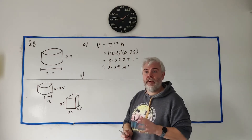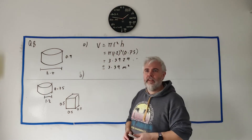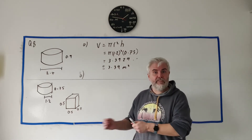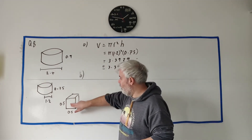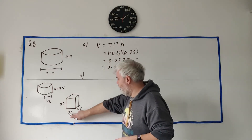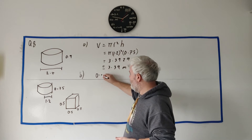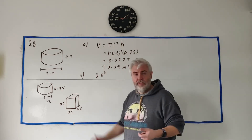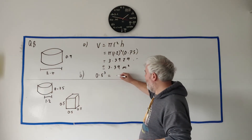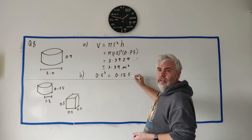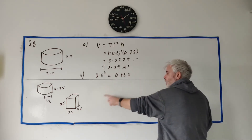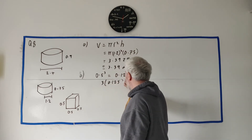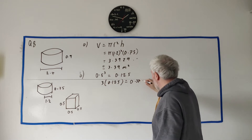They ask us to show that the total volume of three seats is a given answer. Anytime it asks you to show something, they just mean find it but they've given you the answer just in case you get it wrong. The volume of a cube is width times height times length, which is 0.5 times 0.5 times 0.5 — that's 0.5 cubed, which equals 0.125. They bought three of them so we multiply by three: 3 times 0.125 equals 0.375.